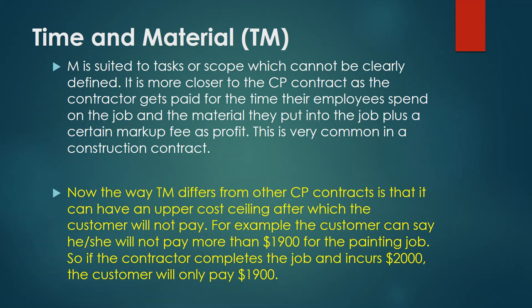If the contractor completes the job at a cost of two thousand dollars, the customer will only pay one thousand nine hundred dollars. This makes the T&M contract a mix of both fixed price and cost plus flexibility. We'll stop here for today and look further into the legal elements of a contract in the next lecture. Any questions, please post to the Moodle forum — thank you very much.